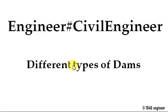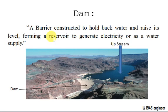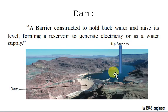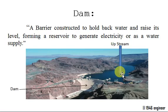Hello viewers, in this video I am going to explain you briefly about different types of dams. First of all, let us get into the definition of a dam. A dam is a barrier which is constructed to hold back water and raise its level, forming a reservoir on the upstream side to generate electricity or water supply for irrigation or drinking.